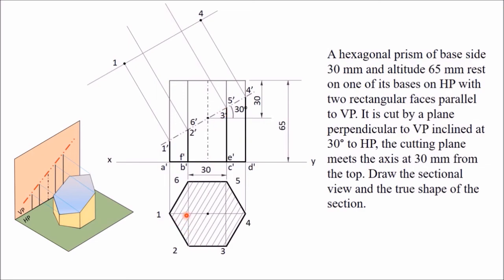Measure this length — take this length using your compass from this point to this point. Now, this is symmetrical — this side and all these sides are the same. Just take this length from this point to this point once, then cut an arc. Take this point as center and draw two arcs, one on this side and one on this side. In this way, you will get points 2 and 6. With the same distance, take this center and draw two arcs on both sides — these two points are 3 and 5.